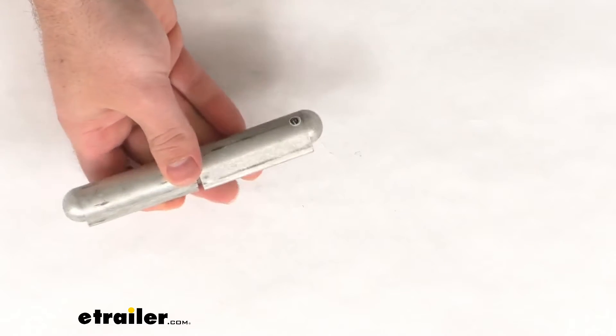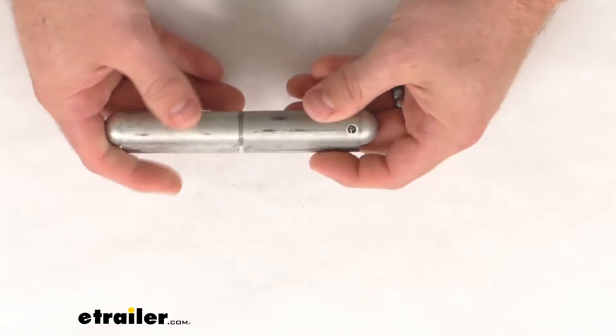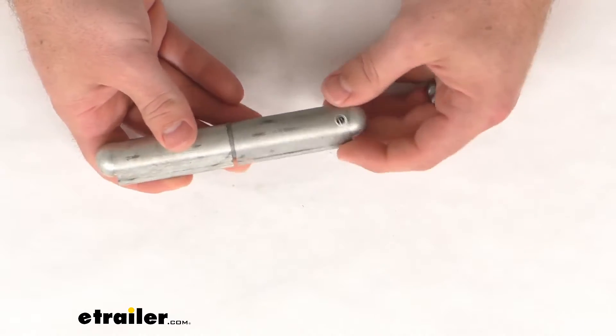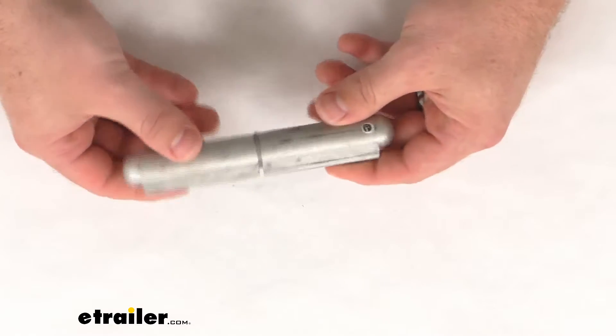And this hinge is going to provide excellent support along the length of your metal door or gate. This can be used for trailers, barbecue pits, electrical boxes, machinery doors, and lots of other applications.